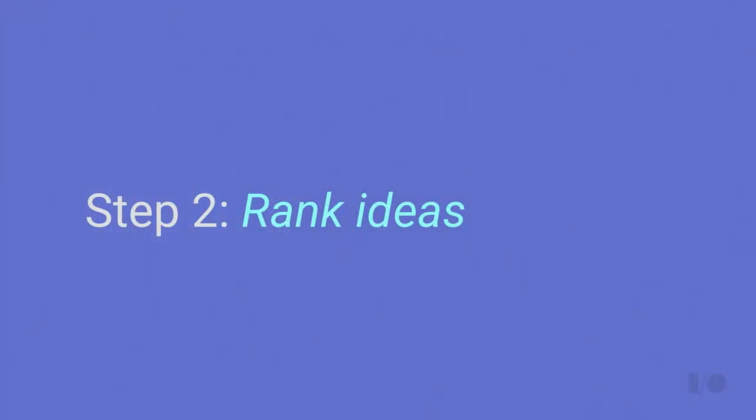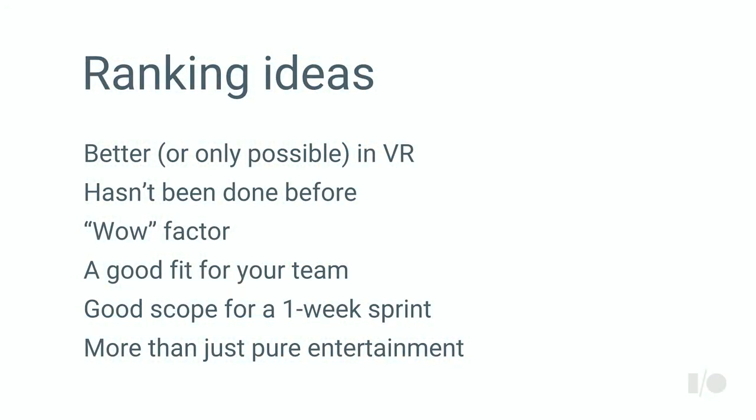Step two is ranking those ideas. Just because you're pursuing a lot of ideas doesn't mean you can skip filtering them. Even though my team has created more than 60 prototypes, we've got way more than 100 in the queue. Ideas are coming in from other teams faster than we can process them. So you need some way of choosing the most promising ideas. We pick a set of criteria to evaluate and stack-rank all of those ideas.